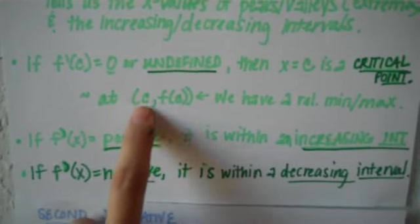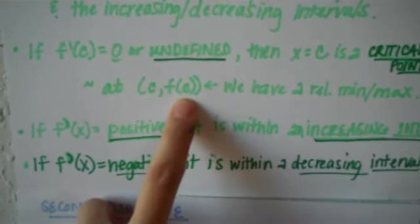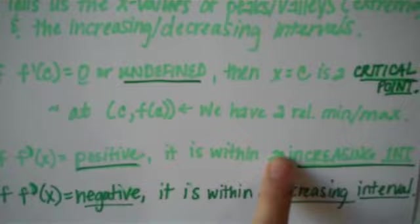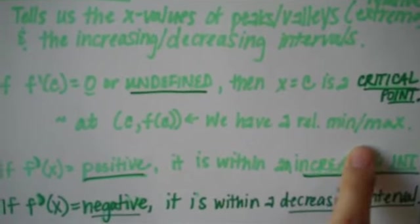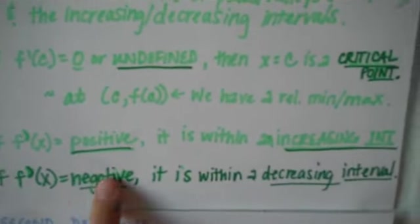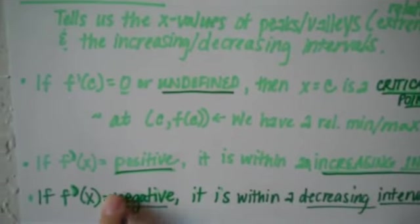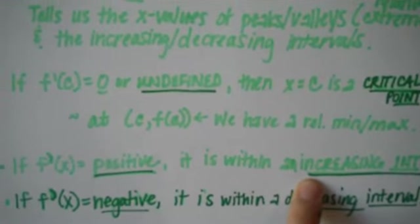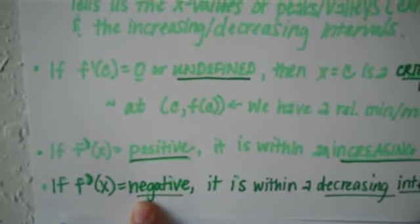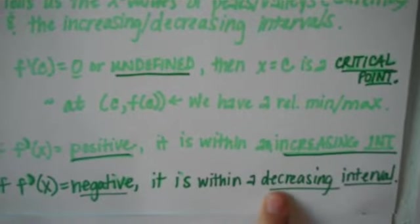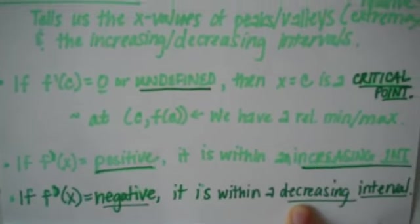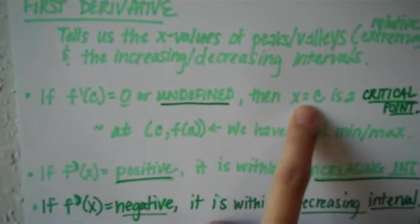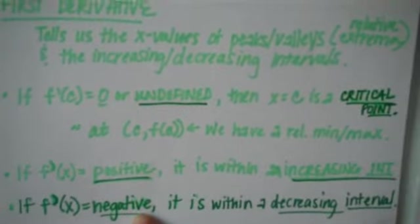All we would have to do is take that value 2 and plug it back into the original function — that gives us (c, f(c)), or (2, f(2)) — and we would have found a relative minimum or maximum. If the first derivative is positive, that tells us our original function is on an increasing interval. If the first derivative is negative, that's when we have a decreasing interval. So I set up a sign line, mark my critical points, and then test points to determine if they are positive or negative.